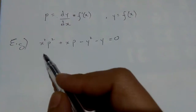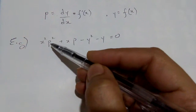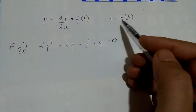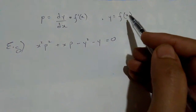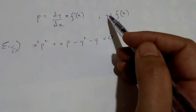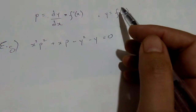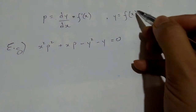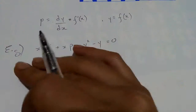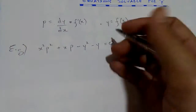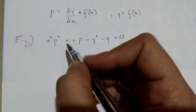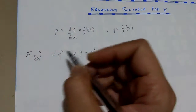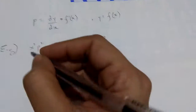This is our equation — you can see that P is dy/dx, y is a function of one variable, and x is the independent variable while y is the dependent variable. We have to find F of x, which is the solution of this differential equation. Let's analyze: are we able to factorize this differential equation of first order and degree 2?